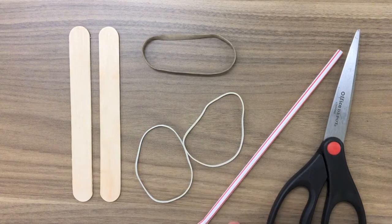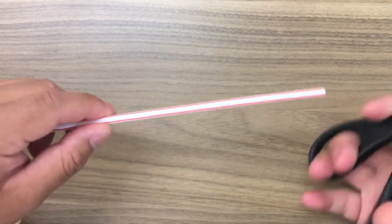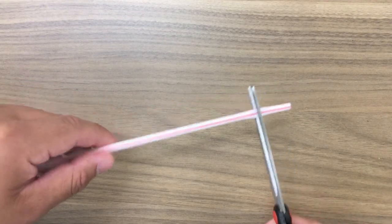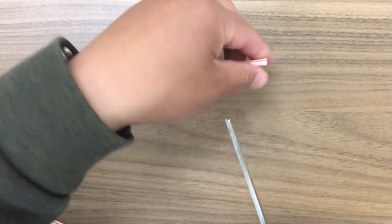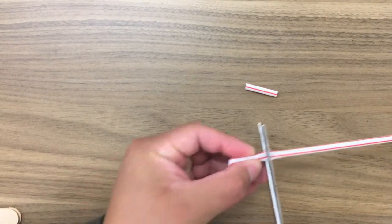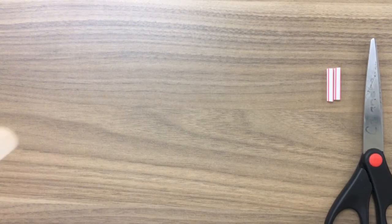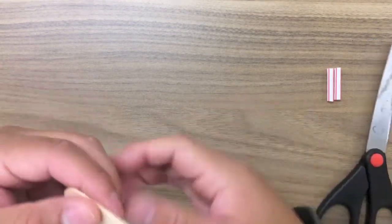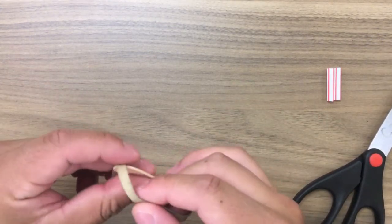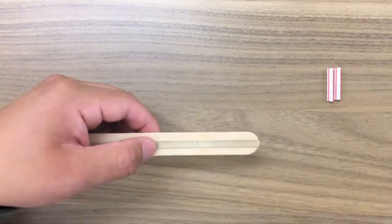two smaller rubber bands, a straw, and some scissors. We're gonna start by cutting two pieces of straw into one and a half inches long. Stretch the thick rubber band around one of the craft sticks and place one of